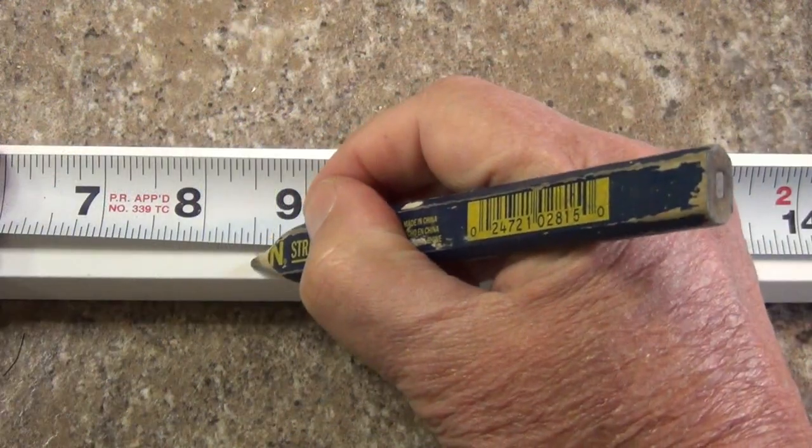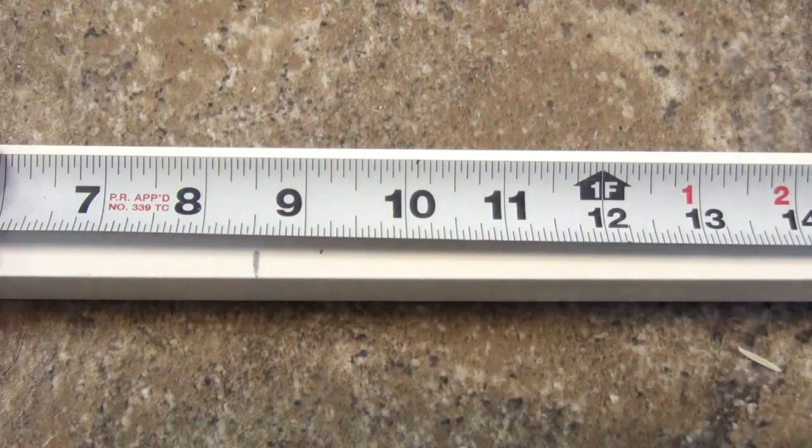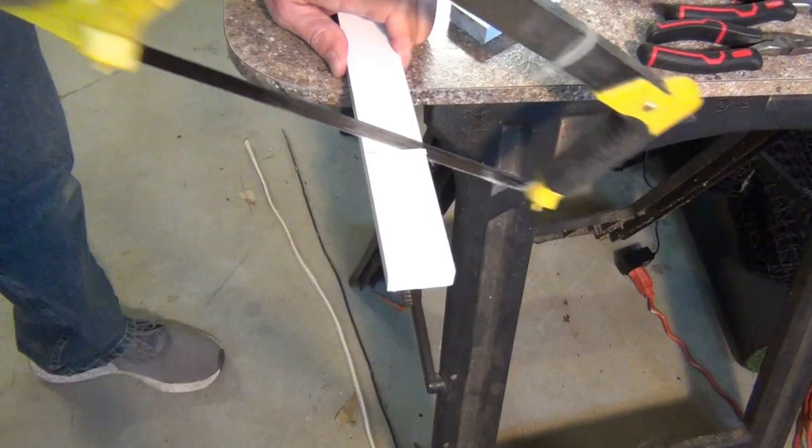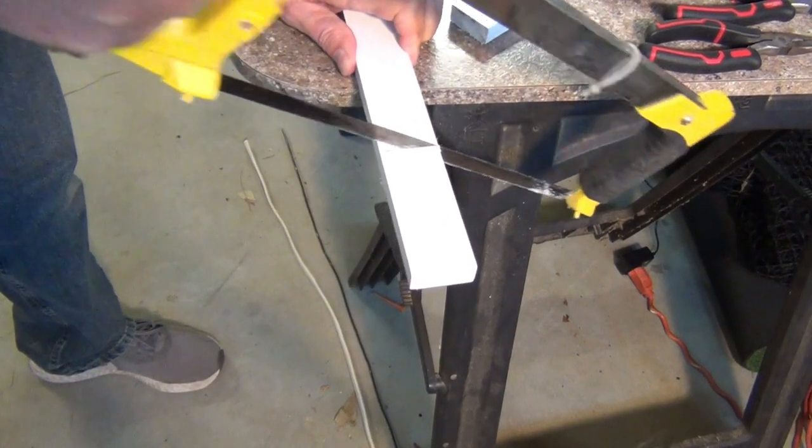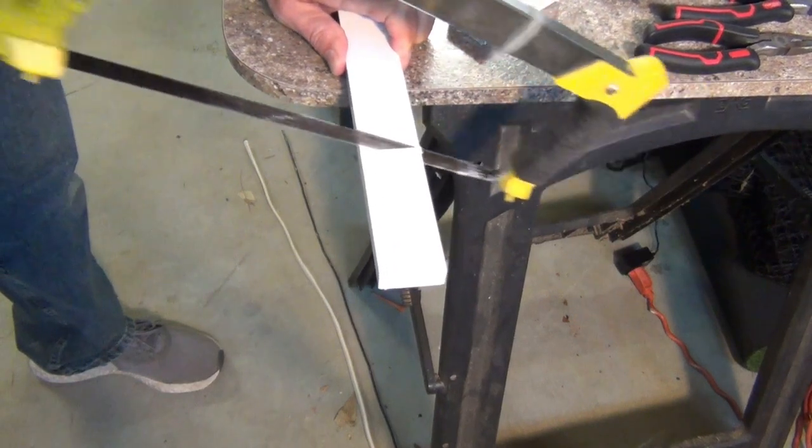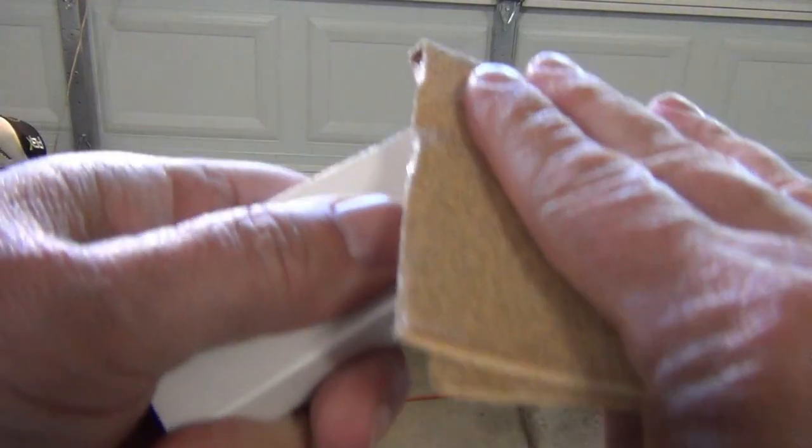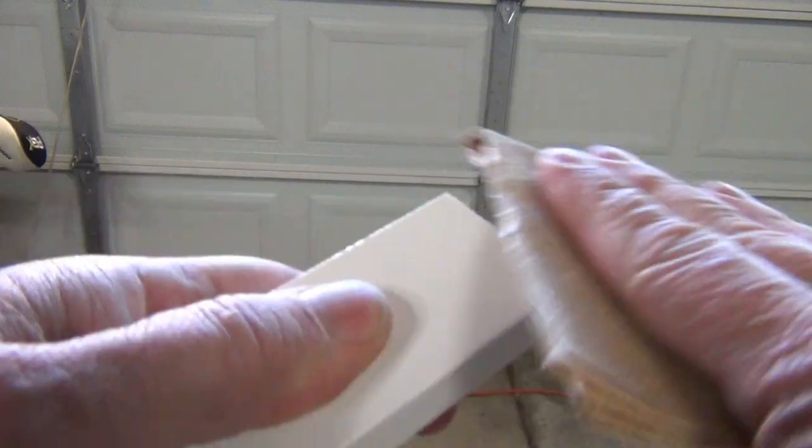Start by cutting an 8 1/2 inch piece off the PVC board. I usually use a power saw, but I wanted to show you that this stuff cuts really easily and I could just use a hacksaw. Use 100 grit sandpaper to clean and smooth out the cut edges.